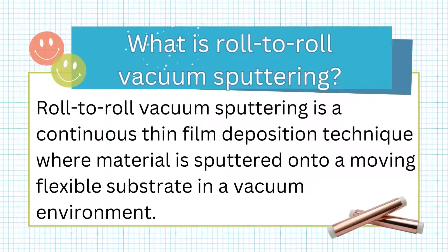What is roll-to-roll vacuum sputtering? Roll-to-roll vacuum sputtering is a continuous thin film deposition technique where material is sputtered onto a moving flexible substrate in a vacuum environment.